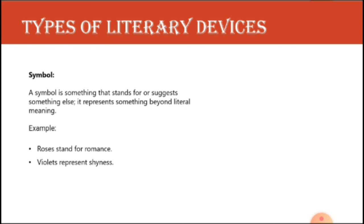The next one is symbol. A symbol is something that stands for or suggests something else — it represents something beyond its literal meaning. The poet conveys feelings with the help of some object or words that indicate something else. For example, a red flower stands for love, roses stand for romance, and violets represent shyness. In symbolism, the poet conveys feelings using selective words and objects that stand for something else.